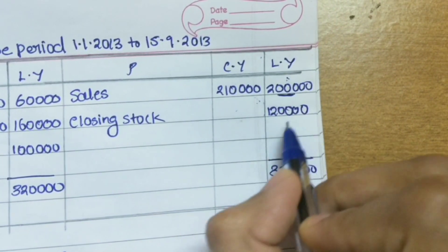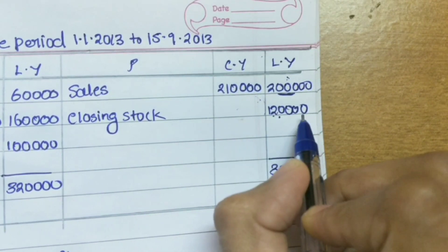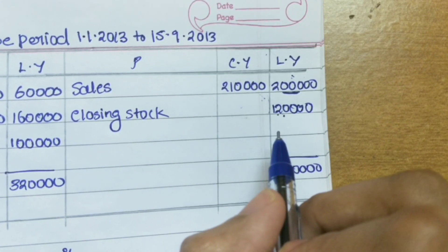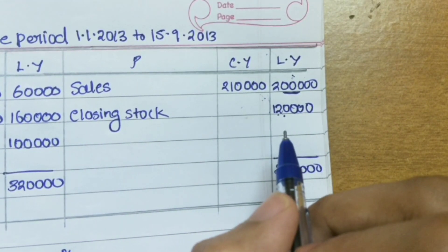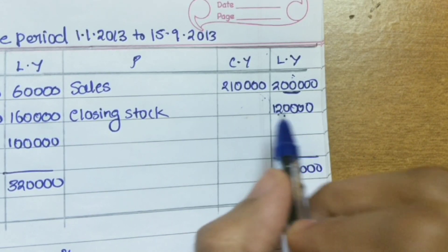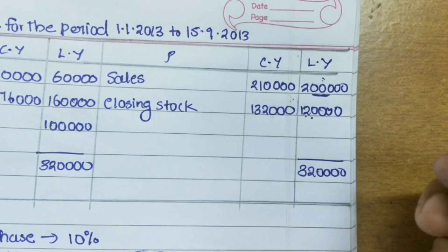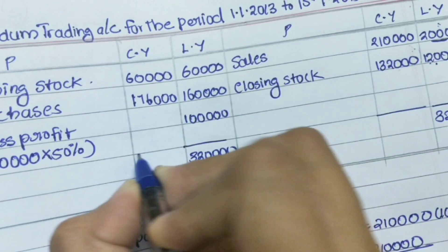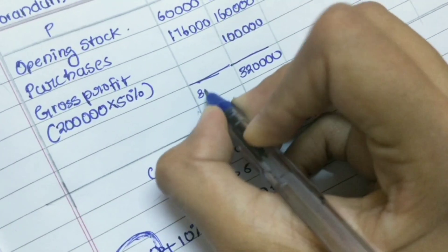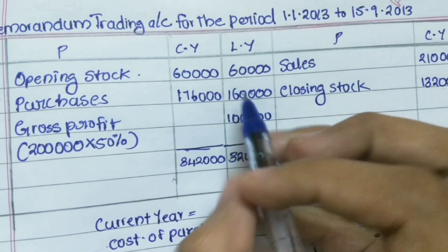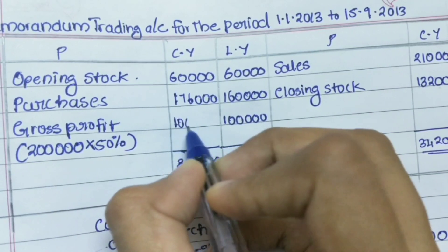We add 10% to the closing stock because the current year has a 10% increase in cost of purchase, which affects the closing stock. So the closing stock for the current year is 1,32,000. Now we balance the current year column and get 3,42,000 on both sides. The balancing figure — gross profit for the current year — is 1,06,000.